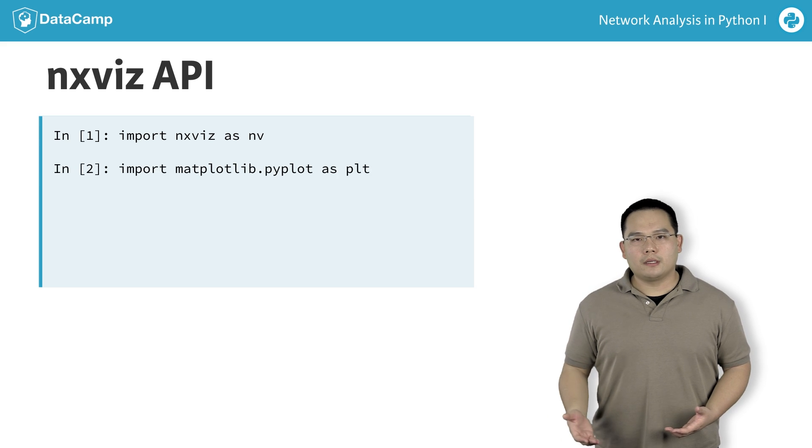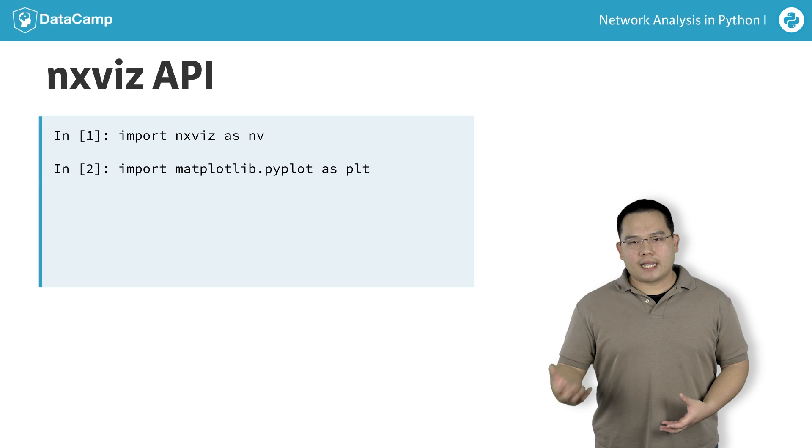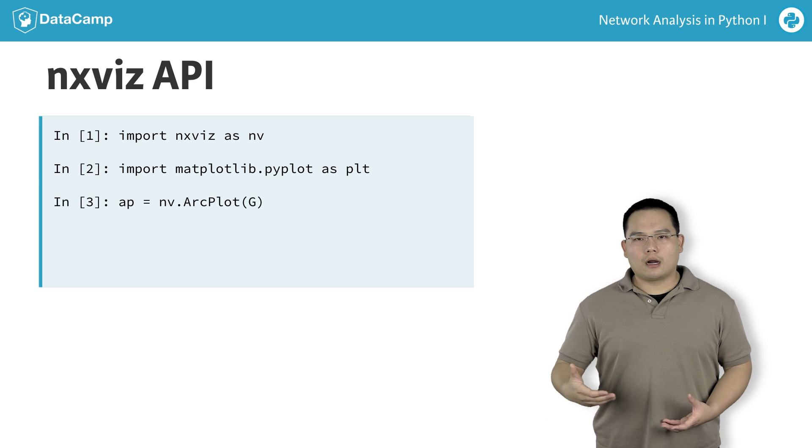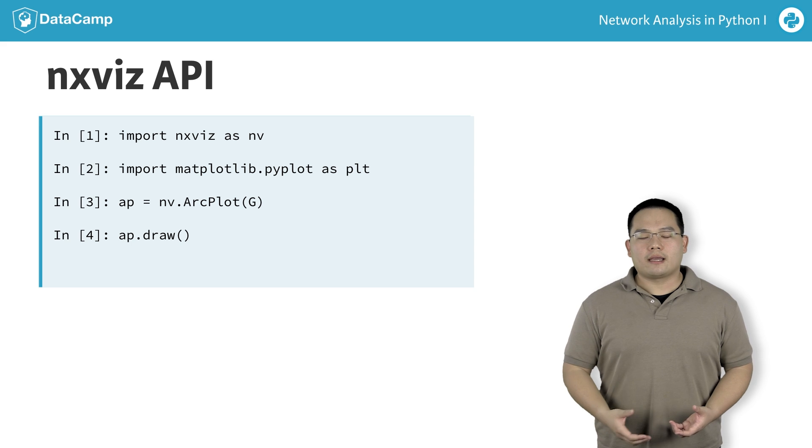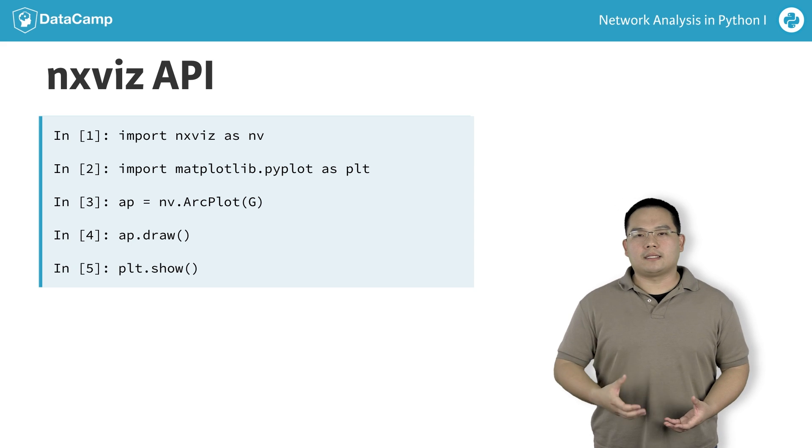and import matplotlib.pyplot as plt to make sure that we can show the plot later. Next, we instantiate a new nv.ArcPlot object and pass in a graph G. We can also order the nodes by the values keyed on some key. Finally, we can call the draw function, and as always, we call plt.show.